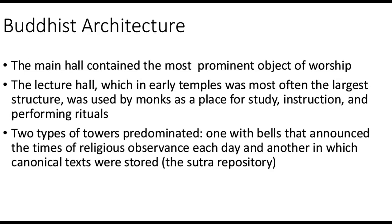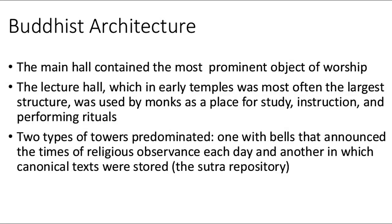Buddhist architecture in Japan: the main hall contained the most prominent object of worship. The lecture hall, which in early temples was most often the largest structure, was used by monks for study, instruction, and performing rituals. Two types of towers predominated: one with bells that announced the time of religious observance each day, and another in which canonical texts were stored — the sutra repository.